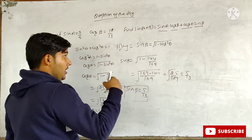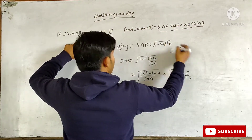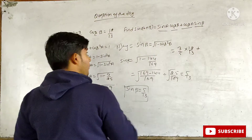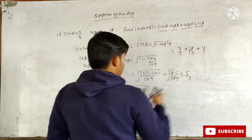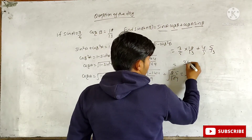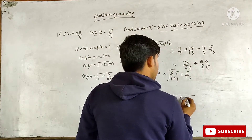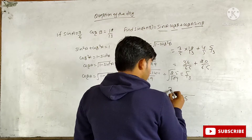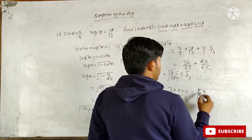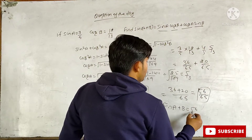Now we have all the values. Putting them into the formula: sin(A + B) = (3/5 × 12/13) + (4/5 × 5/13) = 36/65 + 20/65. The LCM is 65, so 36 + 20 = 56. Therefore sin(A + B) = 56/65.